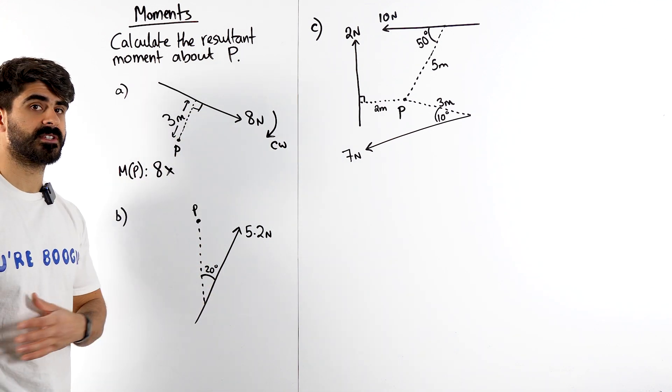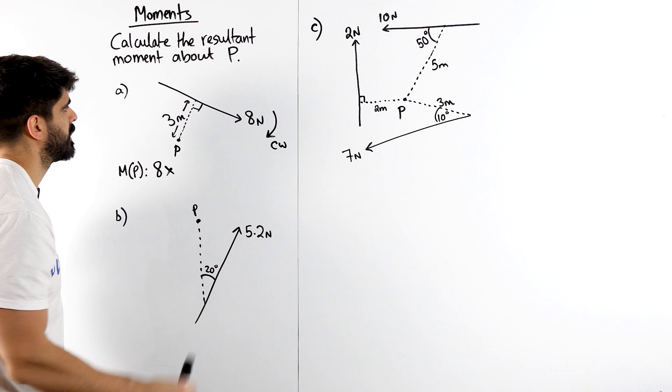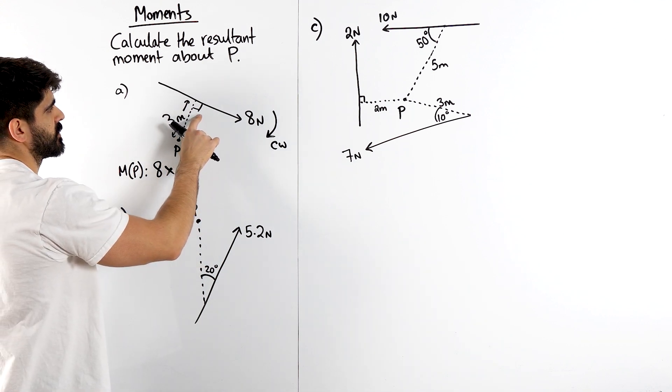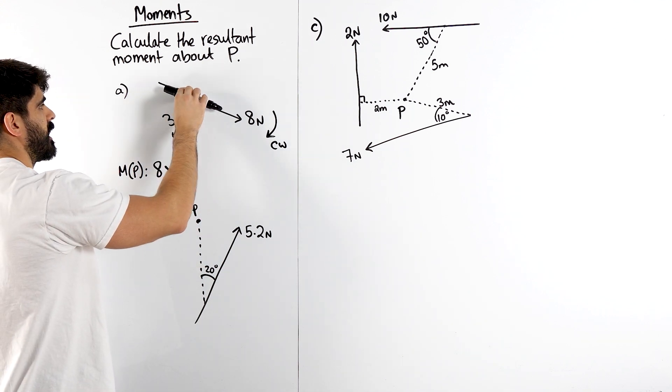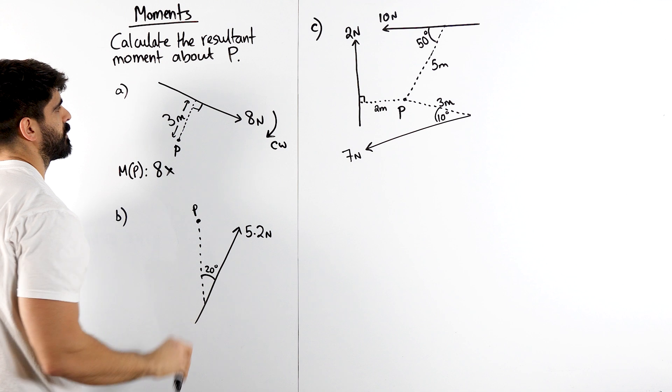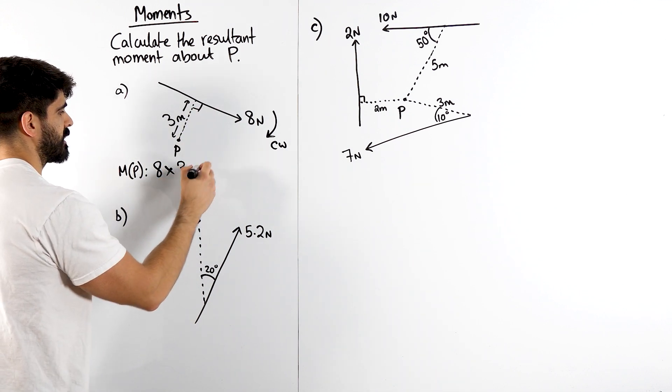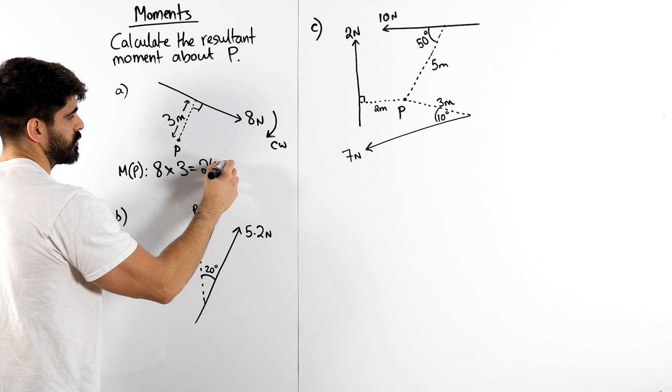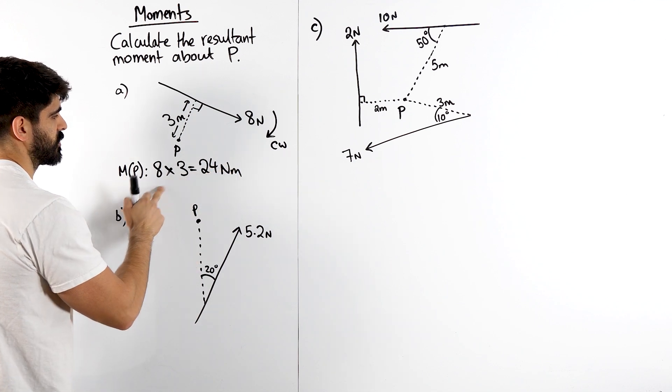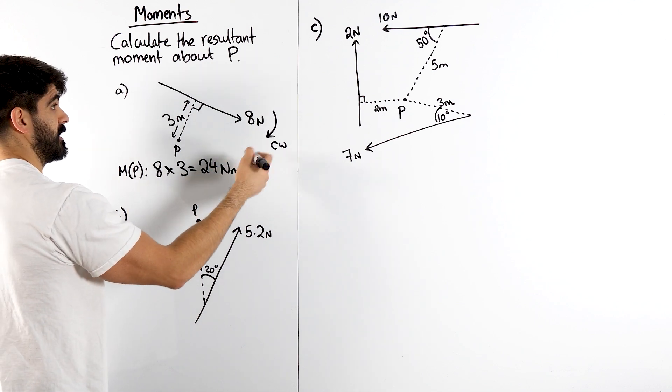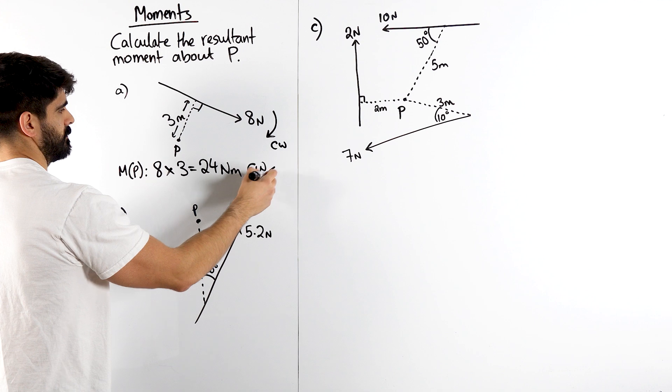Multiplied by its shortest distance between p and the line. Now, the shortest distance can only ever be perpendicular. Here I've given you a perpendicular distance. Because between the line and this is perpendicular. So that 3 is literally the shortest distance. 8 times 3 is 24 Newton meters, forces in Newton's length in meters, clockwise.